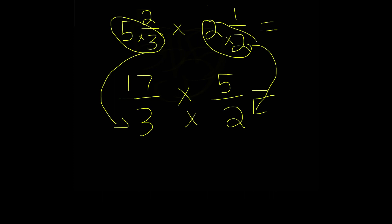What's 3 times 2? 6. What's 17 times 5? 85. So this is our answer.